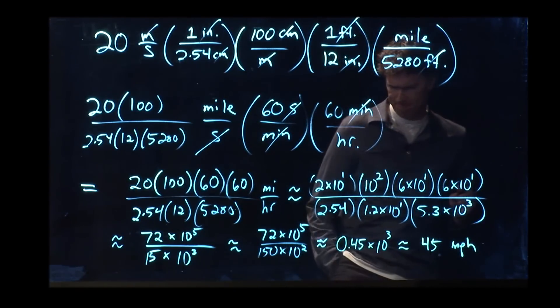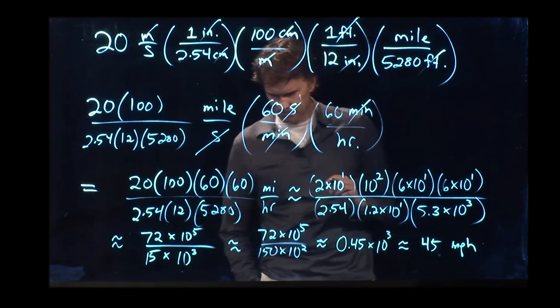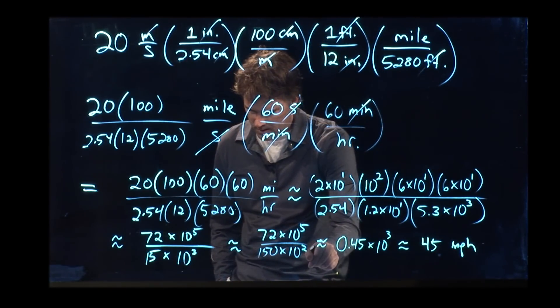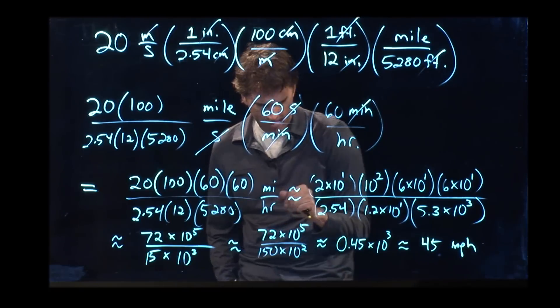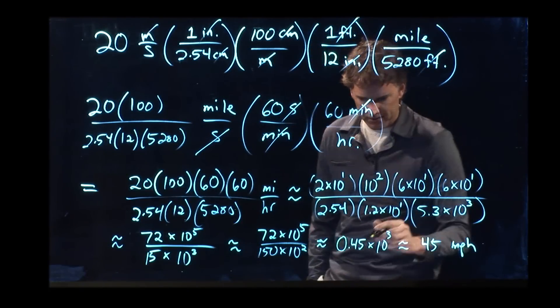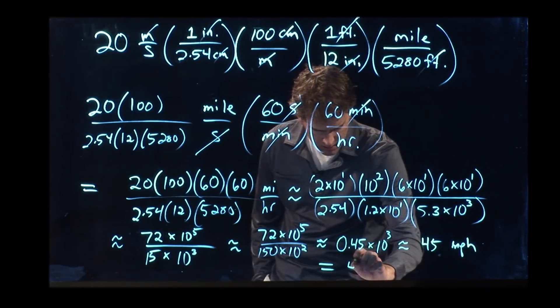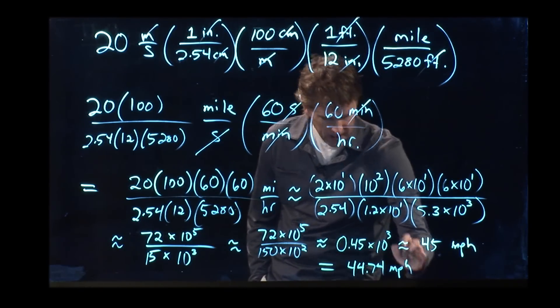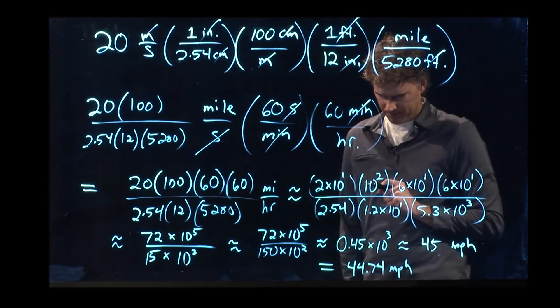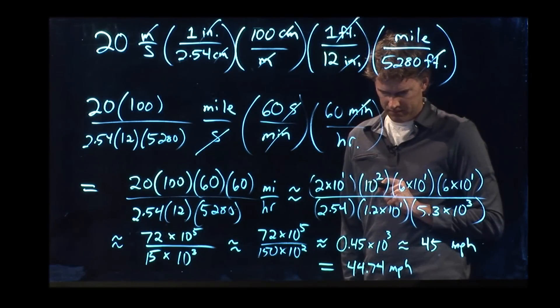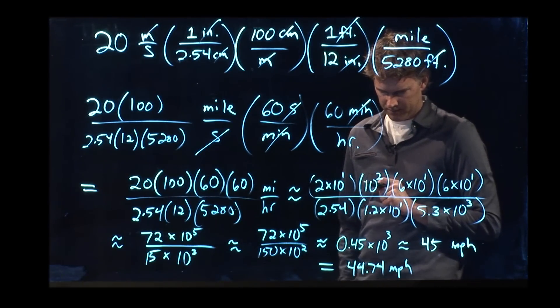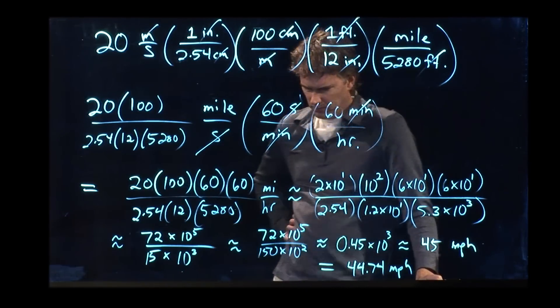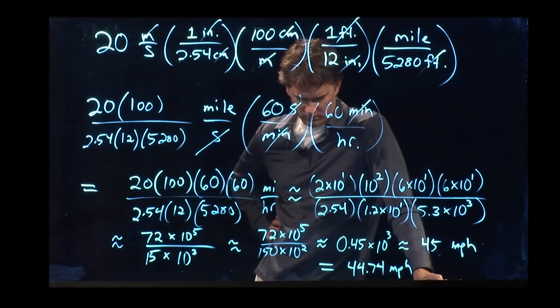Did we do that right? This we did wrong right here, right? Yeah. Came out with the right answer with the sig figs we had. What did you guys get when you plugged it into your calculator? 44.74. 44.74 miles per hour. But this last step here, I think we messed something up. It should be 15 times 10 to the 4th on the bottom.